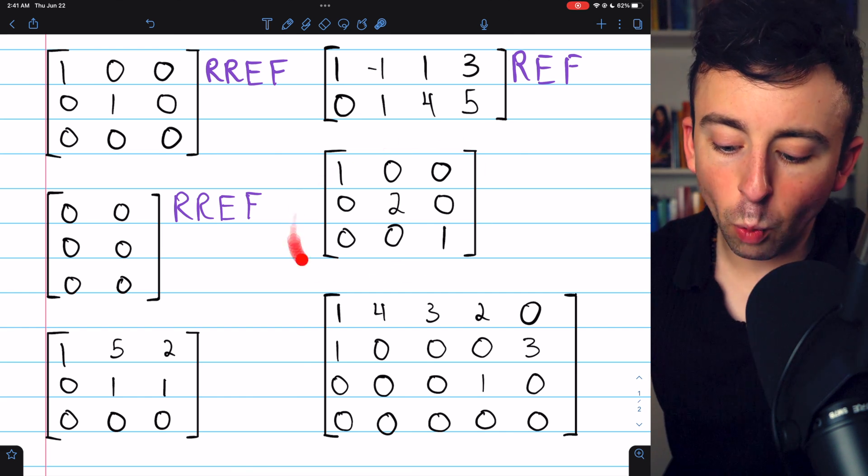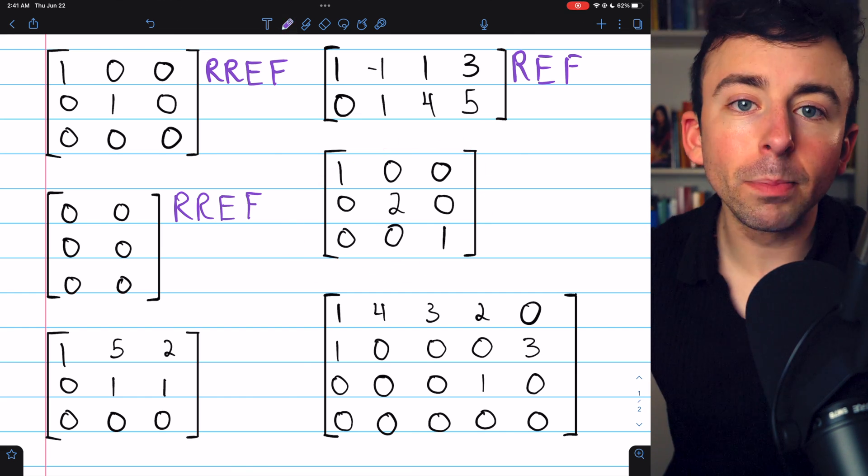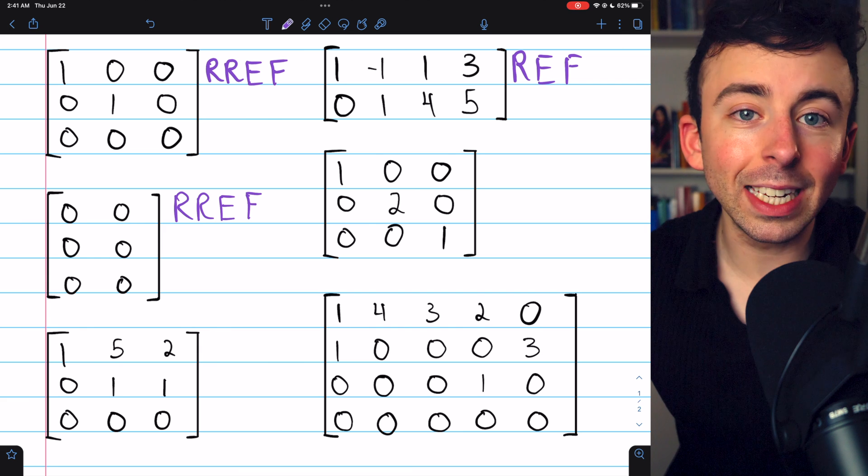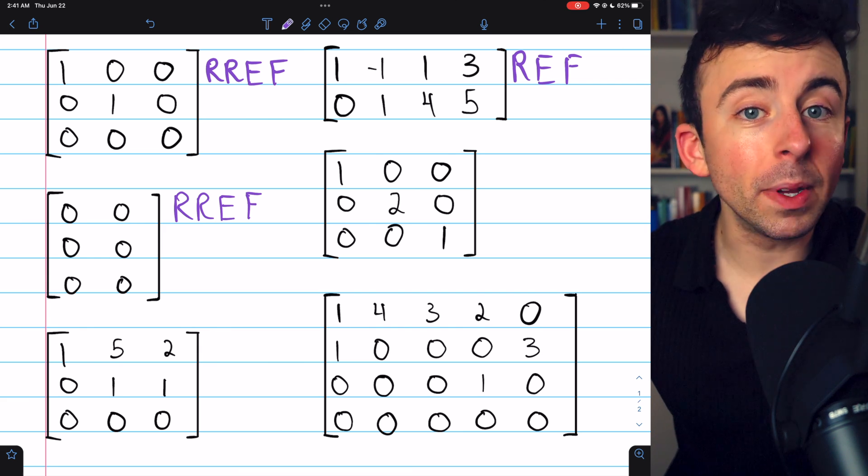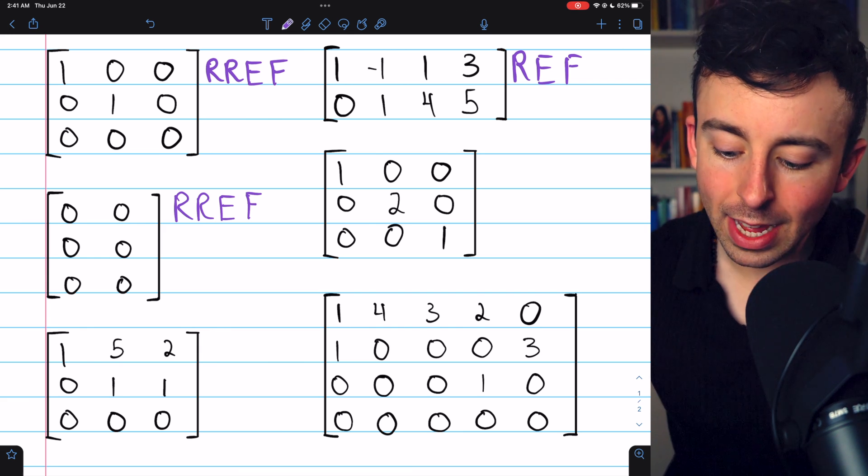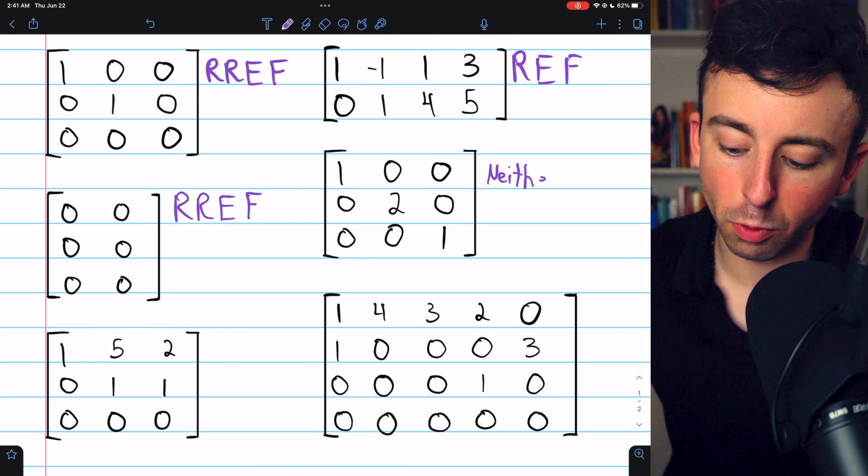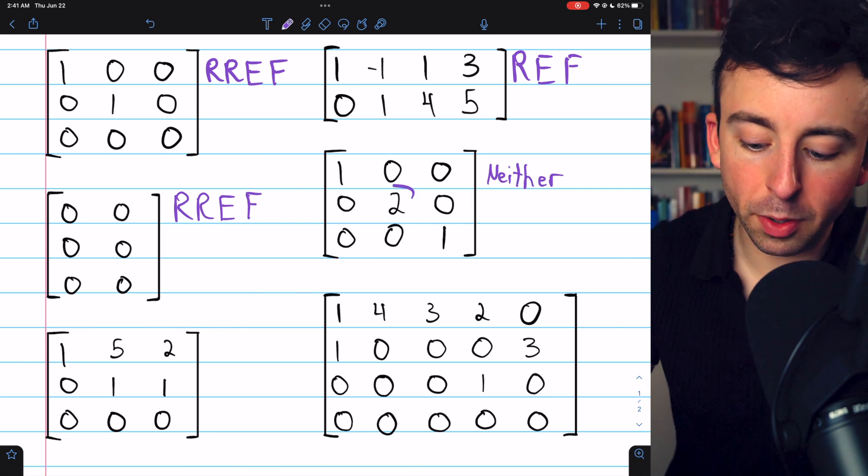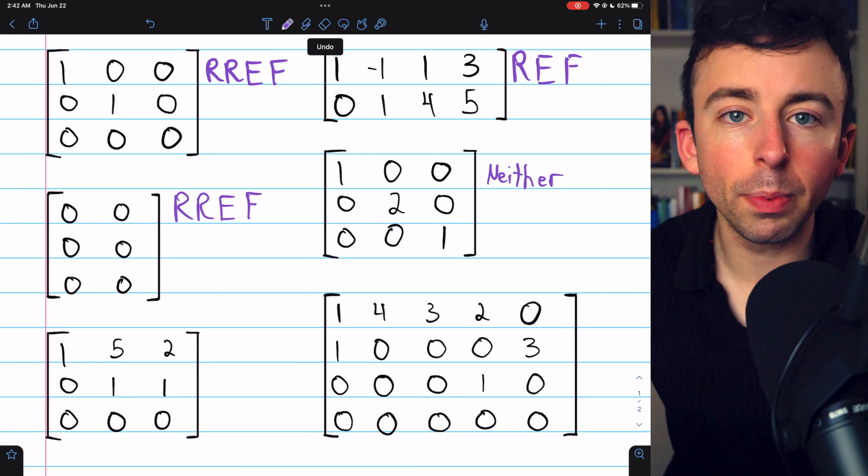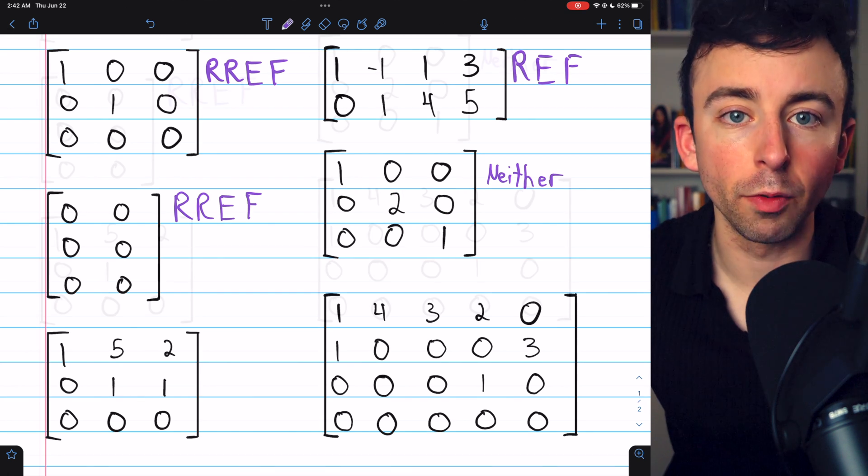This next matrix would be in row echelon form by definitions that allow leading entries other than one. But because we are not allowing leading entries other than one, this matrix is in neither row echelon form or reduced row echelon form. If we just multiplied row two by a half, it would be in reduced row echelon form.